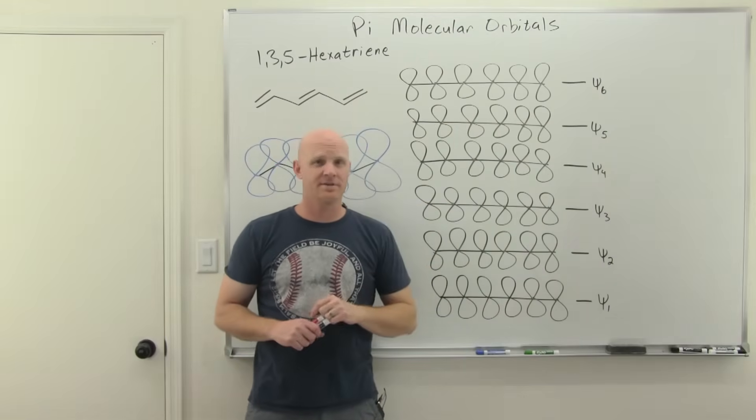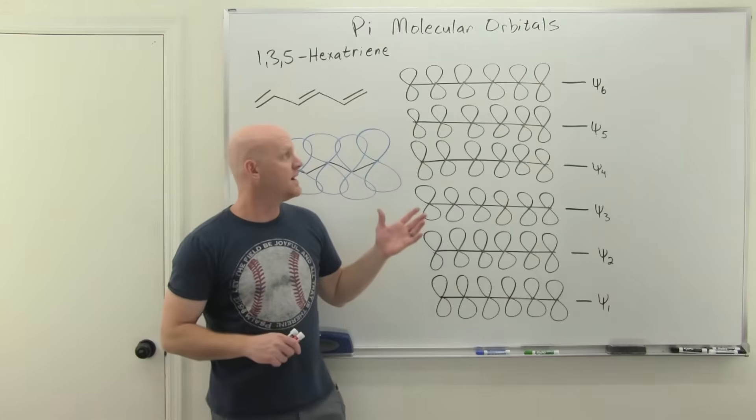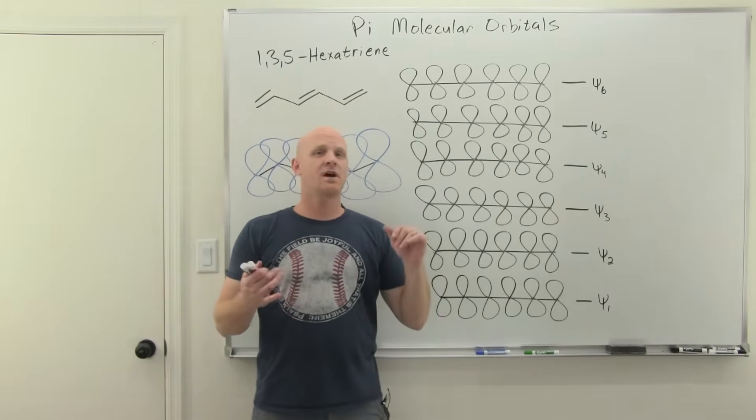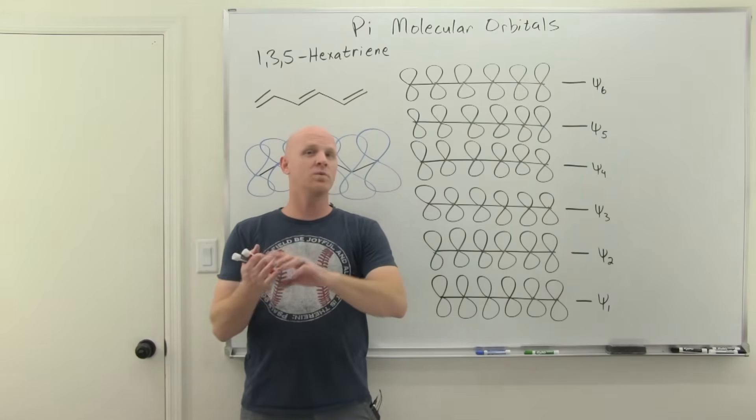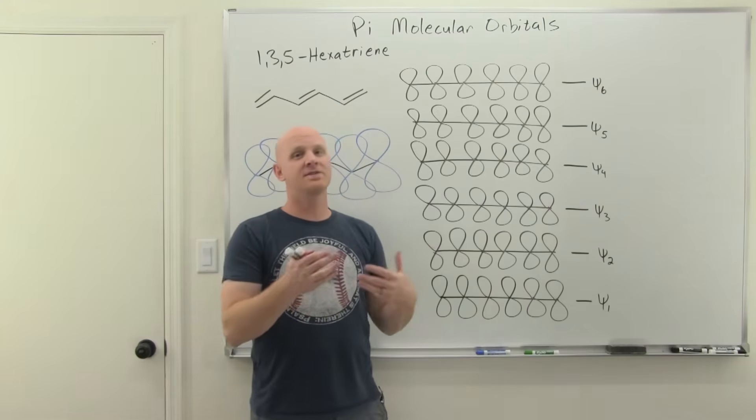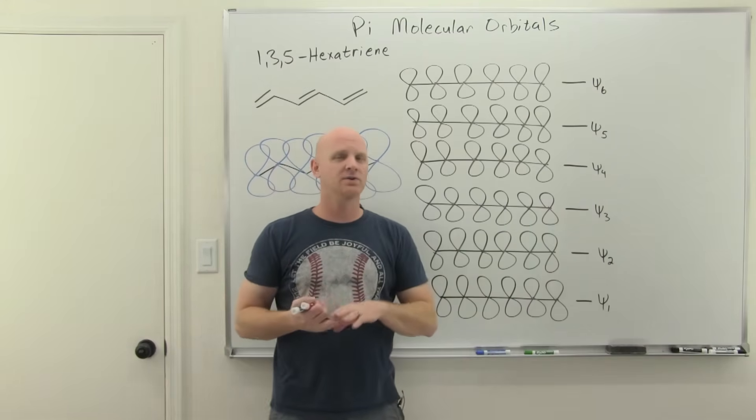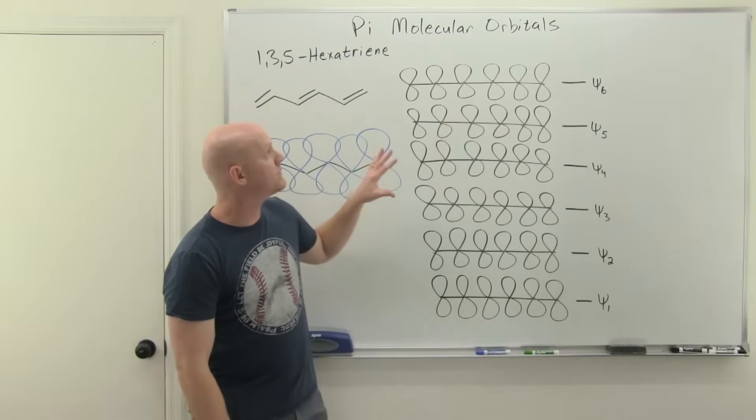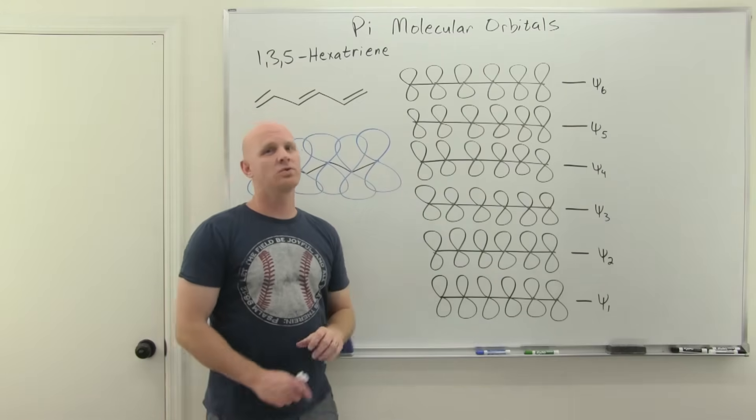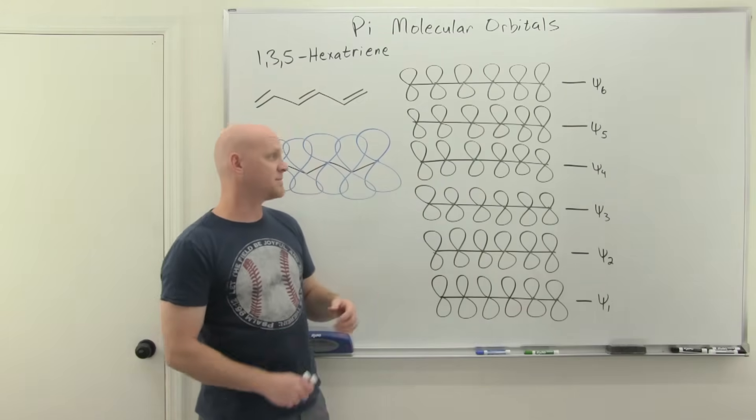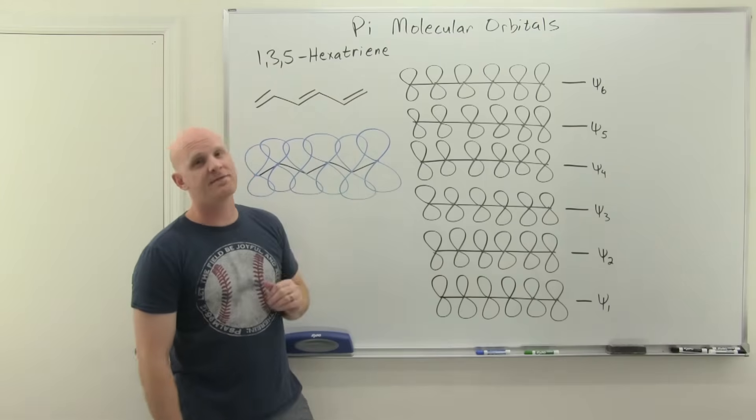The pi molecular orbitals for 1,3,5-hexatriene is what we're going to talk about here. In the last two lessons, we've already talked about the pi molecular orbitals for both ethylene and 1,3-butadiene, and then for the allyl system, the allyl cation, radical, and anion. So now we're ready to move on to the most complex molecular orbital diagram we're going to look at for the conjugated pi systems here for 1,3,5-hexatriene.